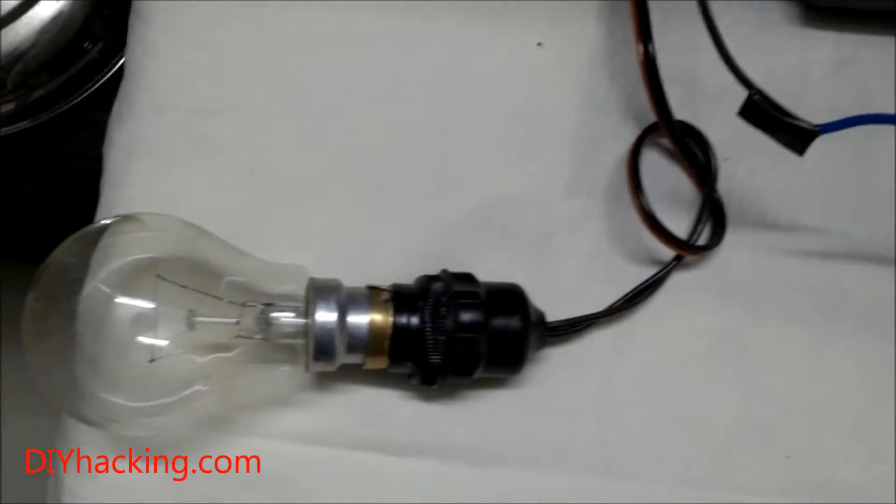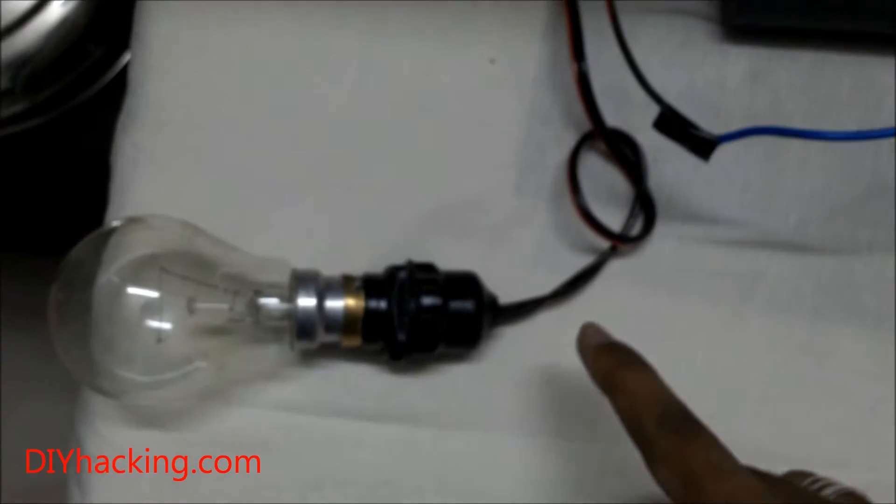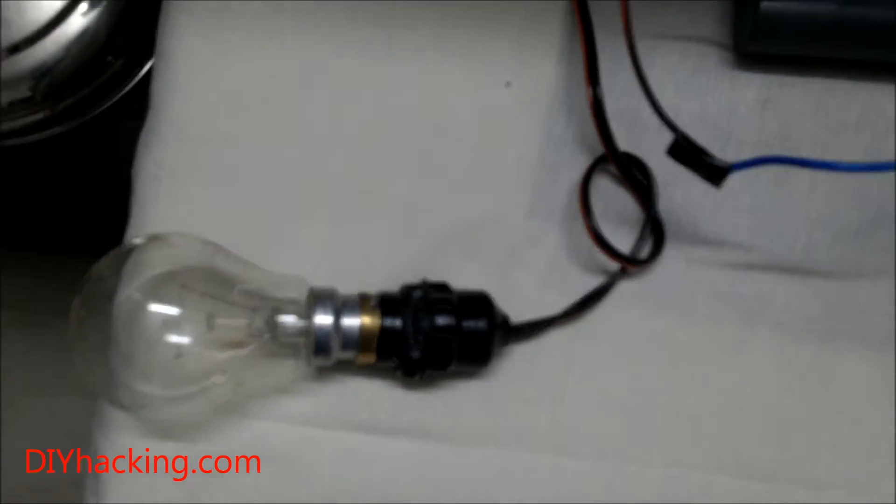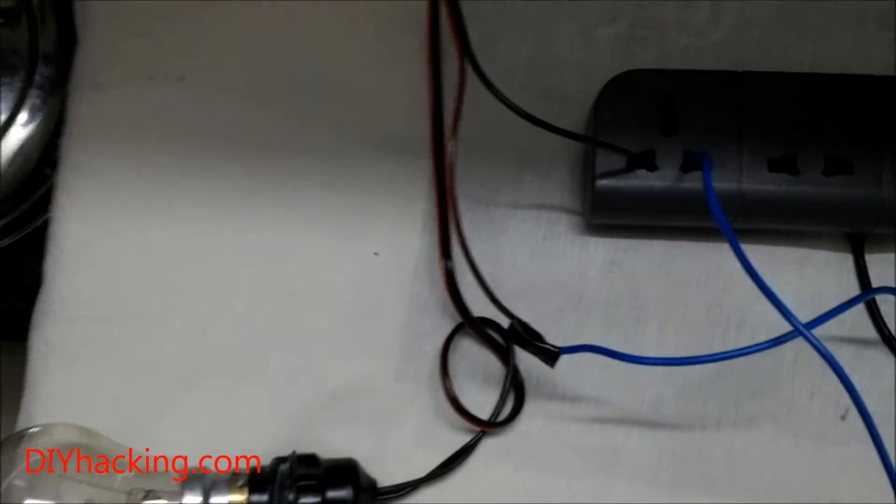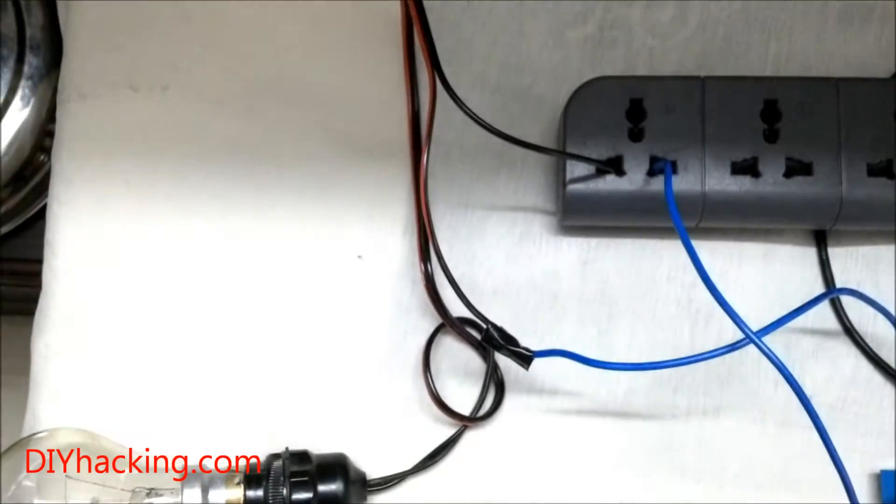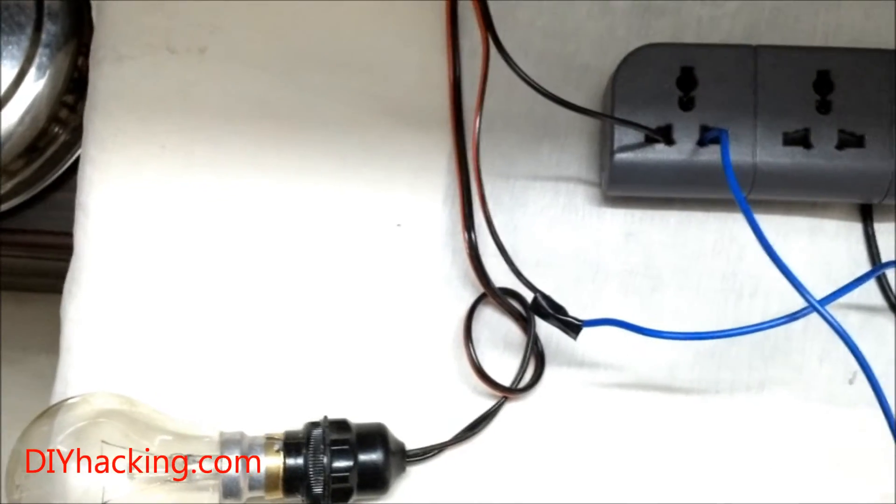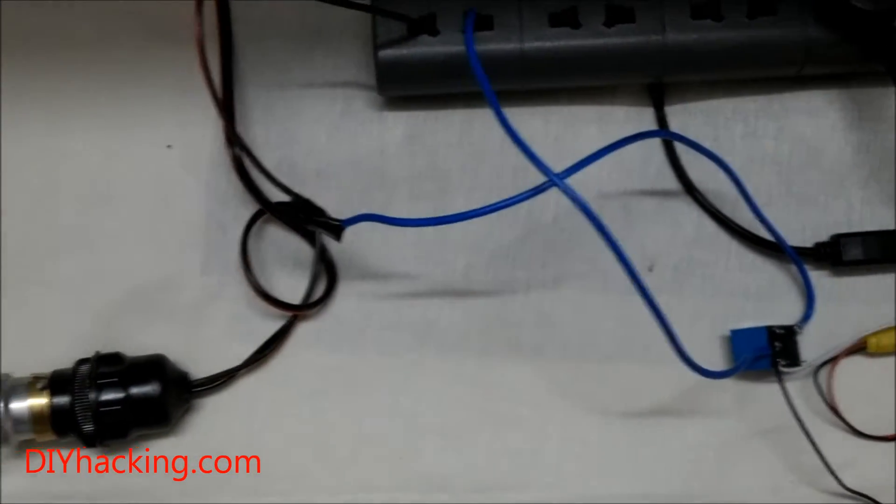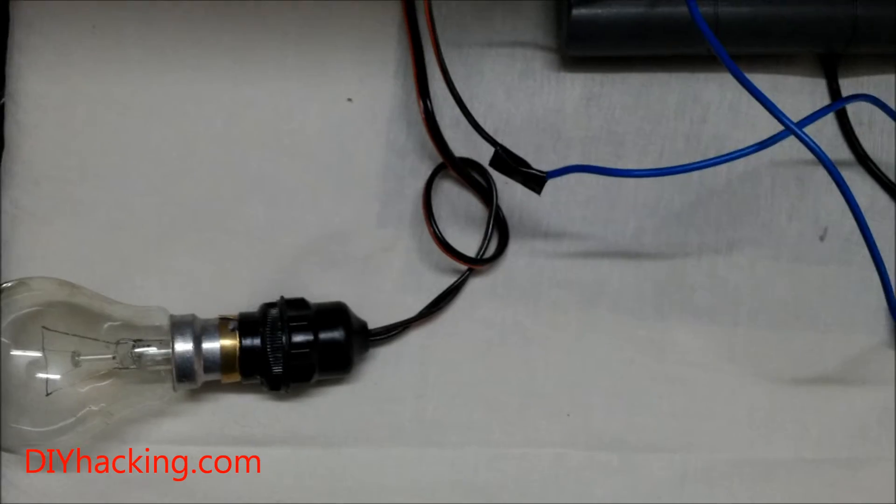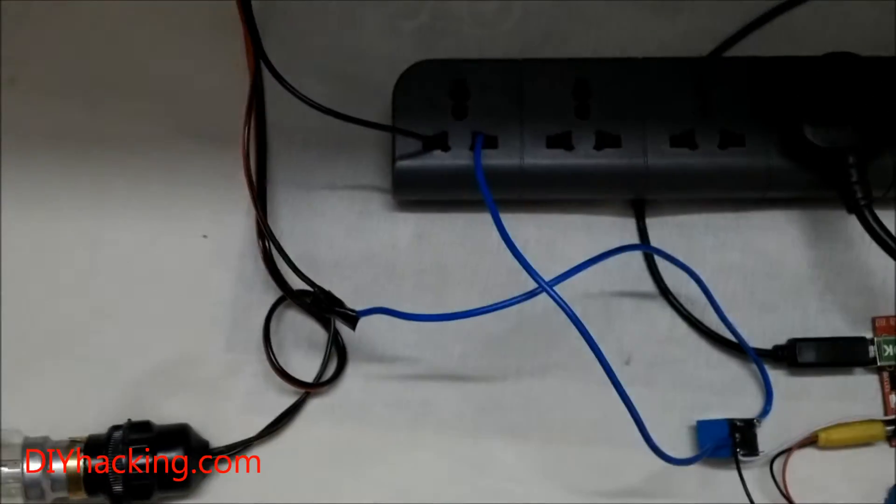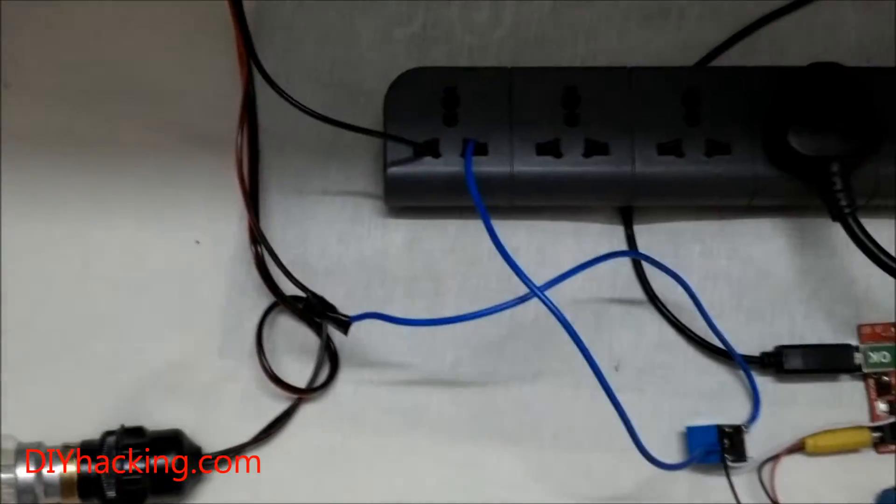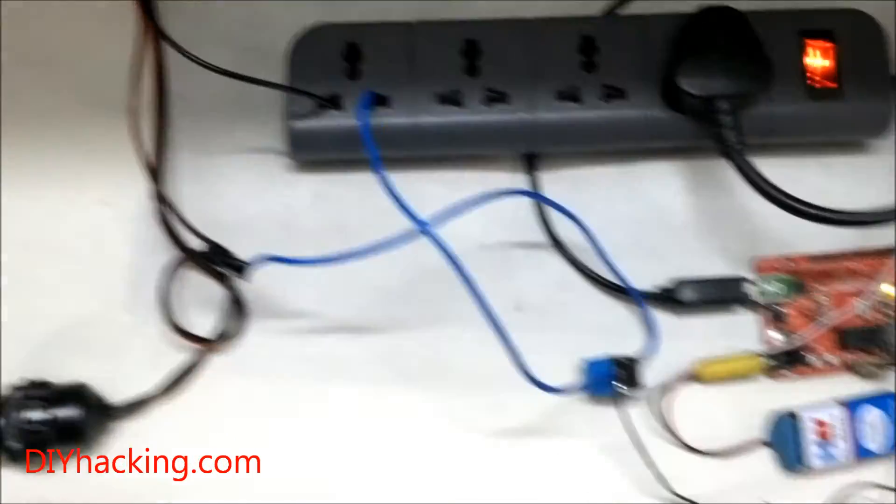The connections for the relay are very simple. The bulb has two wires going from it. One wire is connected to the AC plug, and the other wire goes through the relay and is then connected to the other line of the light bulb. It's a very simple connection.